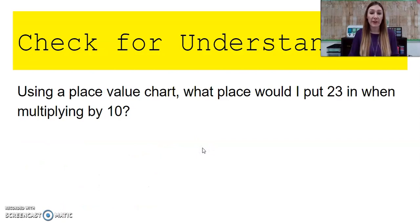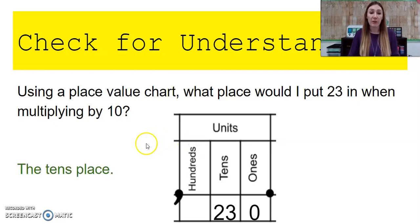Using a place value chart, what place would I put 23 in when multiplying by 10? If I'm multiplying by 10, I'm going to put my number that I'm multiplying by in the tens place.